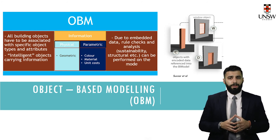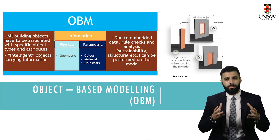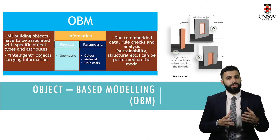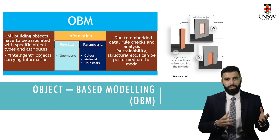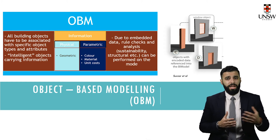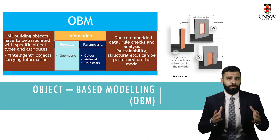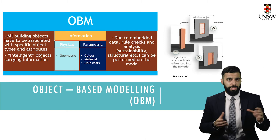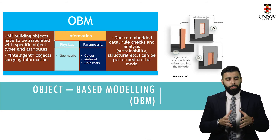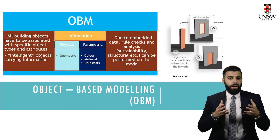Revit relies on the concept known as object-based modelling, or OBM. All building objects are intelligent — for instance, walls and floors are differentiated since each represents a different object. A wall would have several layers such as insulation, plasterboard, and masonry on the outside, while a floor can be composed of a 300mm concrete slab. Each of these objects has different sizes, different materials, and hence different information associated with them. This is referred to as object attributes.